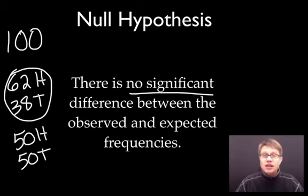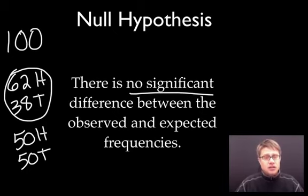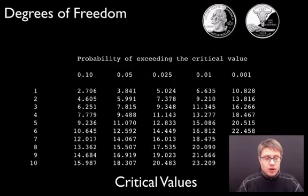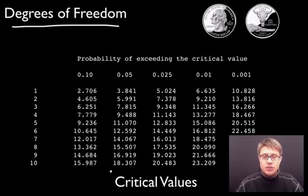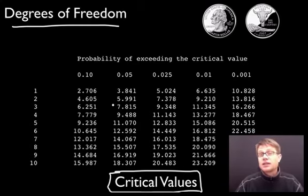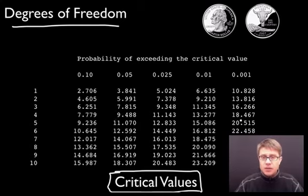With chi-squared, we can measure our data and see if there's a statistical difference between those two. The null hypothesis states that there's no statistically significant difference between the observed values and the expected frequencies. The best way to get good at chi-squared is to do some problems. Before we get to that, there are two terms to define: degrees of freedom and critical values. The whole point of a chi-squared test is to either accept or reject the null hypothesis.